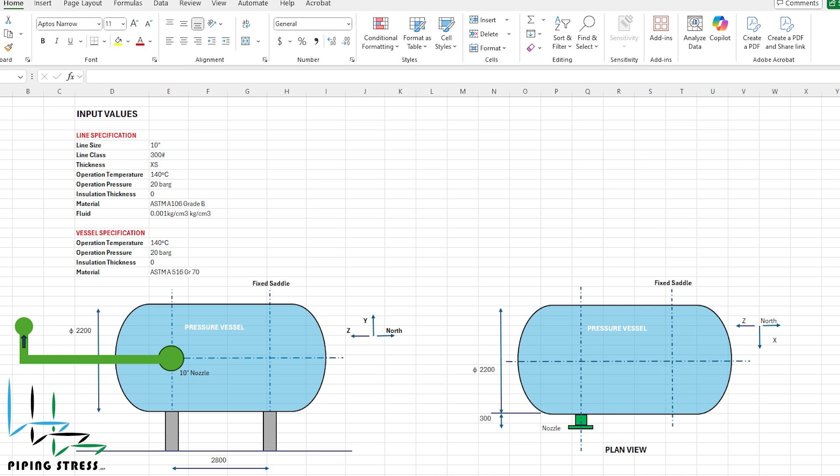The first thing we need to do is list all the input values of the pipe in an Excel sheet. I would like to emphasize that this design is not real and has been entirely created for this training video. The pipe has a diameter of 10 inches. The operating temperature is 140 degrees Celsius, the ambient temperature is minus 30 degrees Celsius, and the operating pressure is 20 bar. The pipe thickness is schedule XS, and the flange class of the pipe is 300 lb.